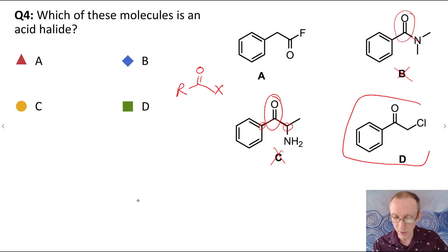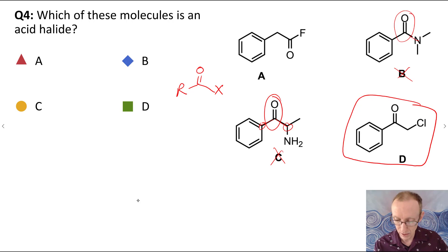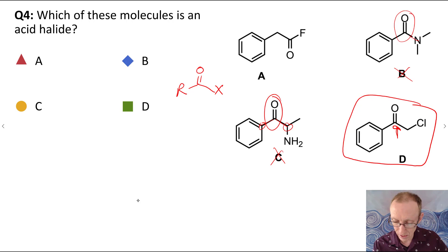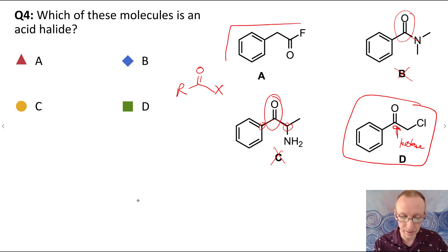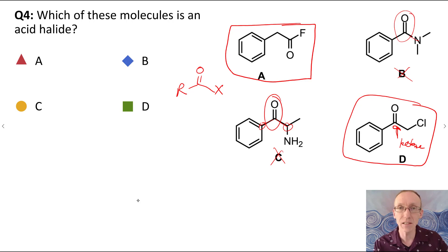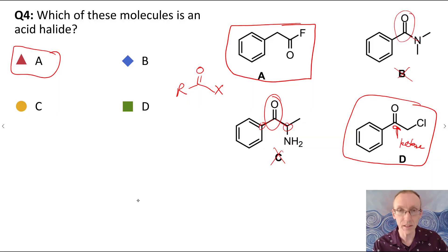D is probably the trickiest one — it has a halogen, but the halogen is not directly bonded to the acyl carbon. So that's actually a ketone that happens to have a halogen somewhere else in the molecule — a halogenated ketone, but it's still a ketone nevertheless. So the only molecule here that is an acid halide is A — it's actually an acid fluoride, or acyl fluoride.